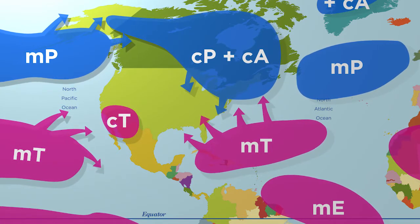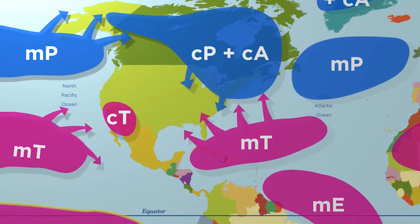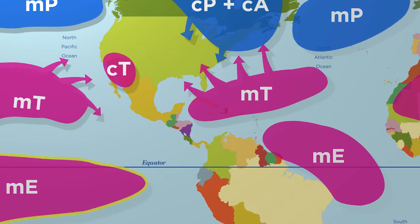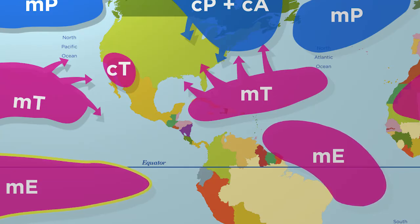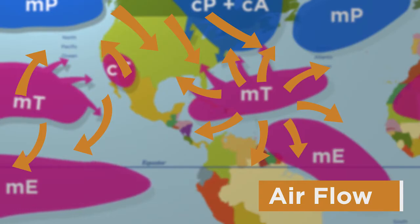There is constant high pressure over the polar regions due to the presence of colder, dense air. However, a low-pressure system sits along the equator due to the presence of warmer, less dense air. The pressure difference causes the air to flow from the poles to the equator. If this flow of air becomes stationary due to a small pressure difference, it takes on the characteristics of that region.